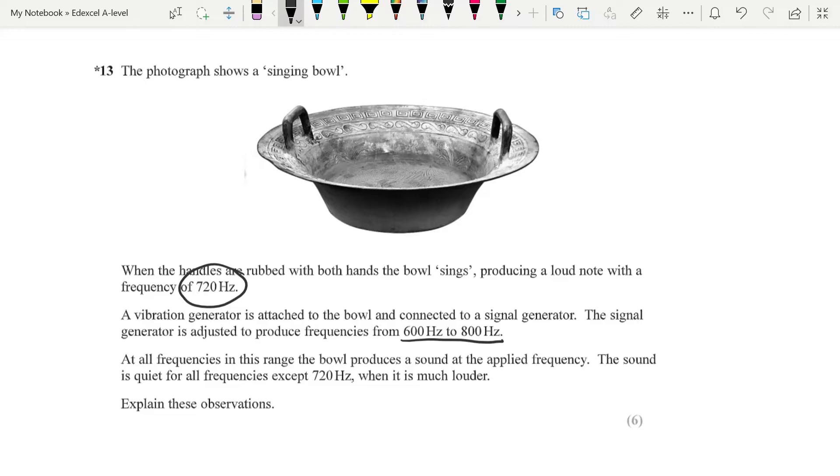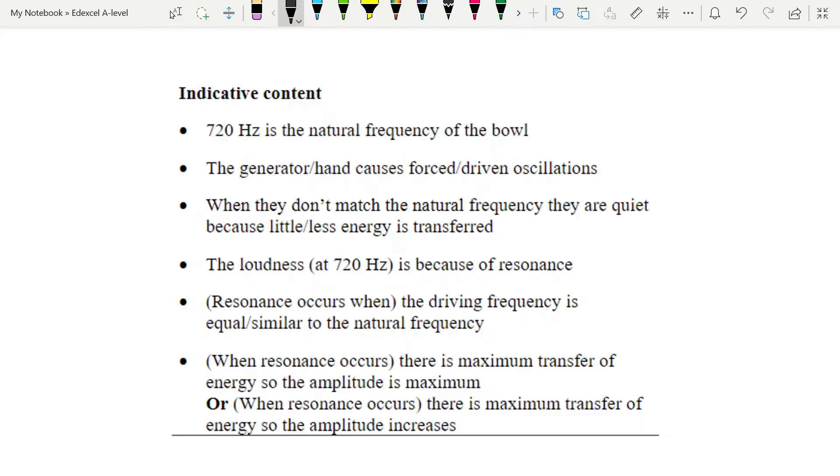Remember, of course, that that's not an absolutely horizontal line before you hit that natural frequency. So you will get increased sound being produced by the bowl, because 600 to 800 is around that natural frequency. But you will note, they say, the sound is quiet for all frequencies except 720 when it is much louder. A question like this has a standard answer, and I'm going to use the mark scheme for this particular question, and show you how you can use that answer for pretty much any resonance question. The only thing that might be different for any particular question is, you may or may not get the natural frequency of the bowl, or it could be a different number.